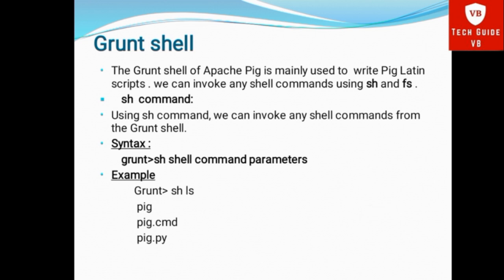Let's start, Grunt Shell. The Grunt Shell of Apache Pig is mainly used to write Pig Latin scripts. We can invoke shell commands using 'sh' and 'fs'. Using the sh command, we can invoke any shell commands from Grunt Shell. Syntax: sh [shell command] [parameters]. For example, grunt> sh ls — this displays the list of files such as pig.cmd and pig.py.